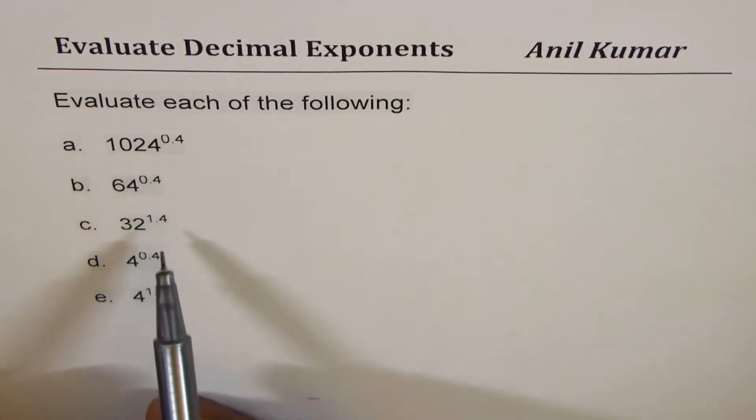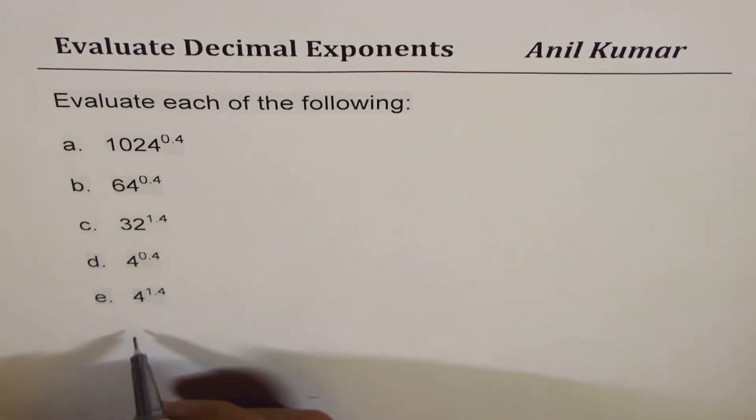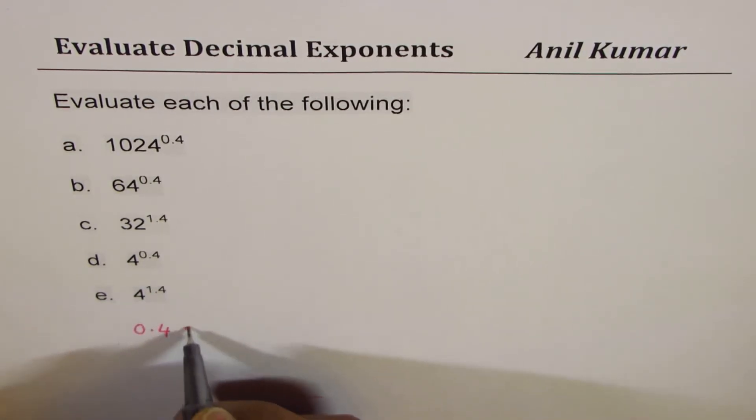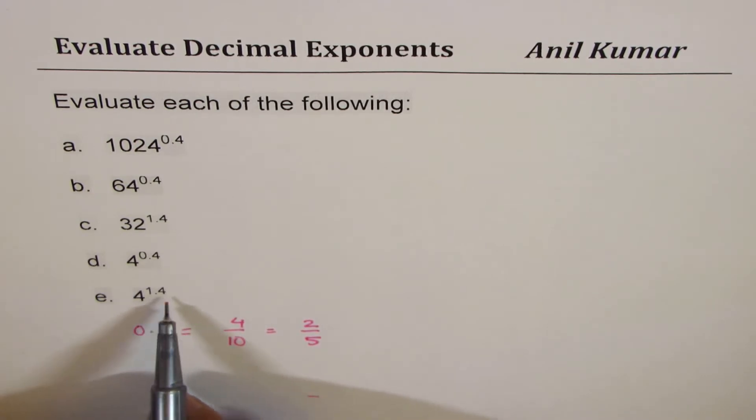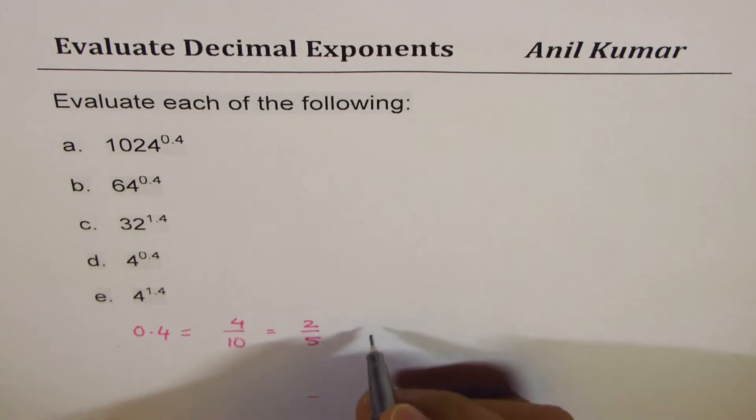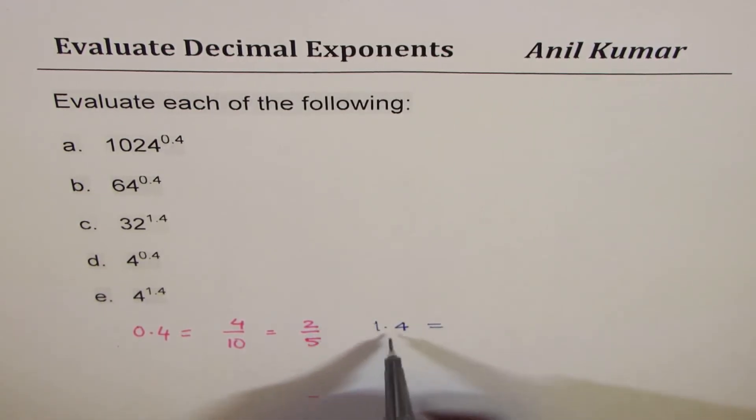So what you see here is most of the exponents are to the power of 0.4. So if I write 0.4 it really means 4 over 10 which could be written as 2 over 5. Now I've also taken 1.4 here. If I write 1.4,